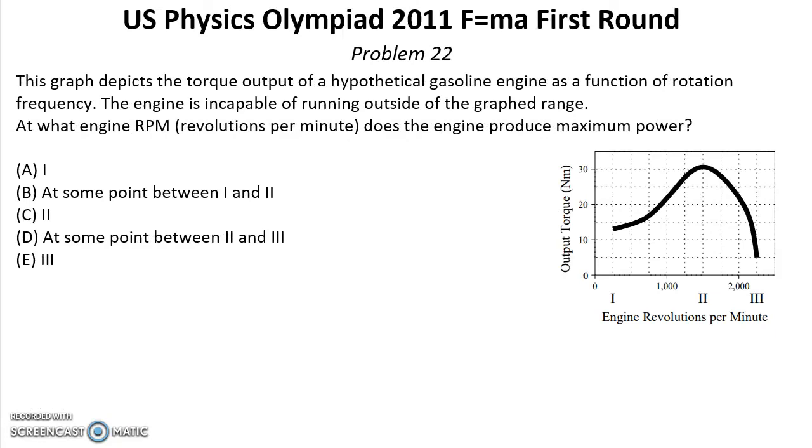Problem number 22. Solution for this problem you can find below this video on the reference in the description. This graph depicts the torque output of a hypothetical gasoline engine as a function of a rotation frequency. The engine is incapable of running outside of the graft range. At what engine RPM revolutions per minute does the engine produce maximum power?